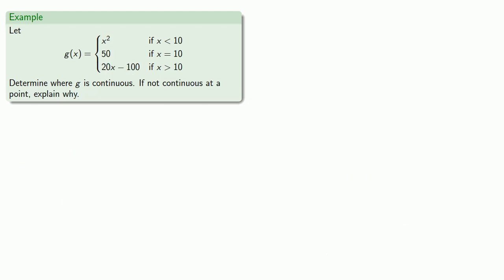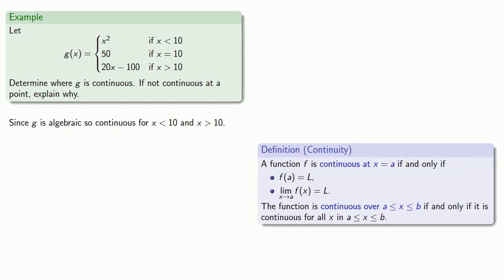We might take another function, also defined piecewise. To begin with, we note that since g is algebraic, it will be continuous for x less than 10 and for x greater than 10. Going over our definition of continuity, we need to verify that g of 10 exists, and we do have a definition. If x equals 10, g of x is going to be 50. So g of 10 exists and we'll check the limit.